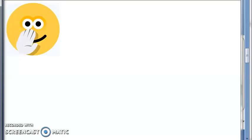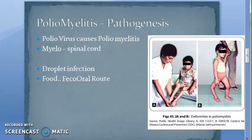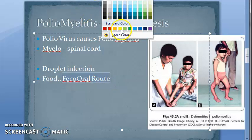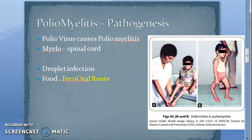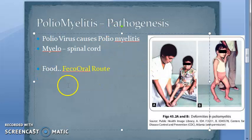Now we want to look at the pathogenesis — what do we mean by pathogenesis? It means how the disease comes and spreads within the body. Polio viruses are transmitted by the feco-oral route — that is the most common route. Even a single dirty food item can transmit polio. Droplet infection can also happen.